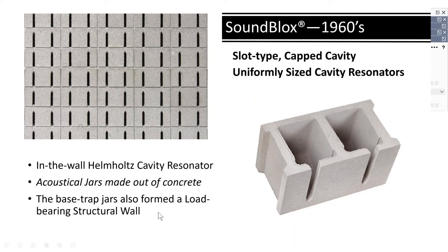In the 1960s, sound blocks acoustical masonry was introduced. Concrete blocks were made to form cavity resonators, taking the place of regular concrete masonry units when forming a structural wall. These slot-type resonators are molded with a solid top, which produces uniformly sized cavity spaces, so each block makes two resonators within a single unit.